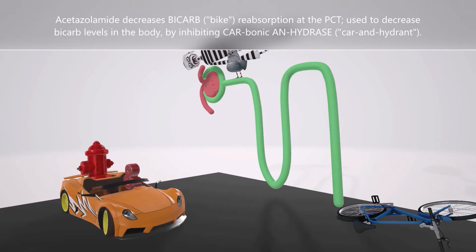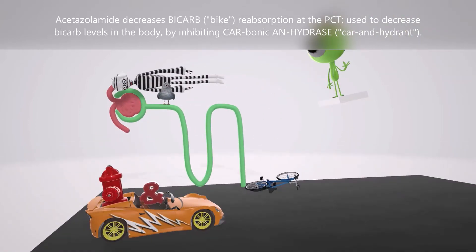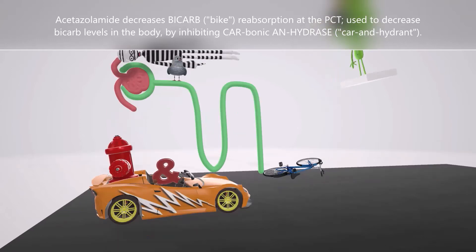How does acetazolamide do this? It does this by inhibiting carbonic anhydrase. Let's take a look. Here we have the car with the 'and' sign that's driving it, and it's got a hydrant in the back. So we'll call this the car and hydrant for carbonic anhydrase.